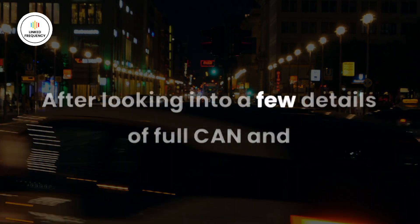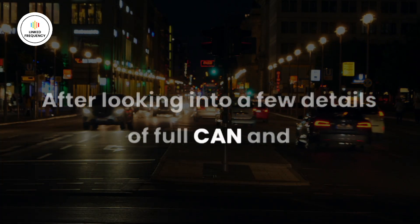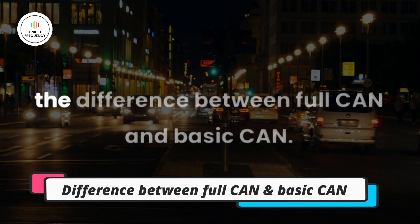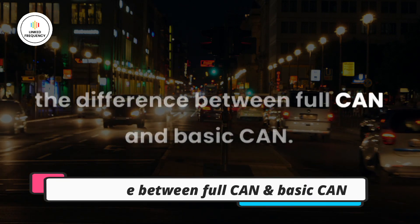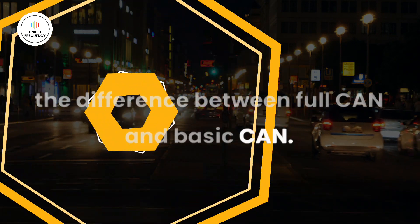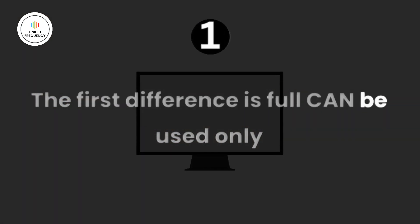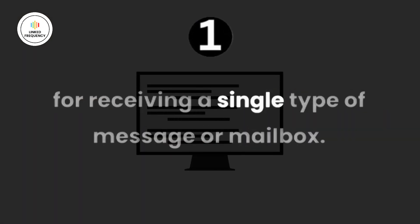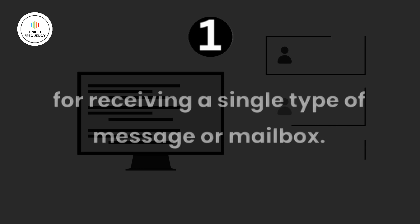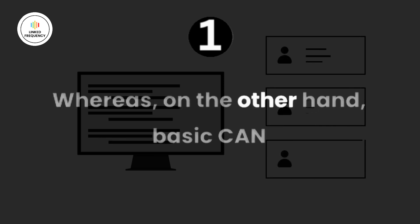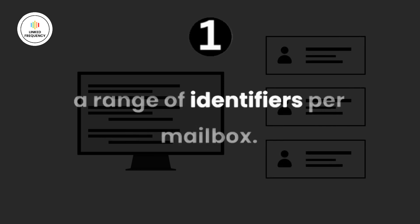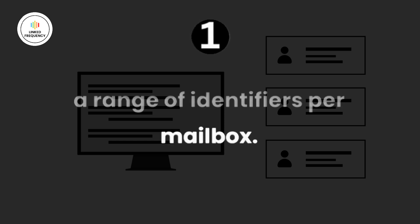After looking into the details, let's understand the differences between full CAN and basic CAN. The first difference is that full CAN can be used only for receiving a single type of message per mailbox, whereas basic CAN configuration can accept messages with a range of identifiers per mailbox.